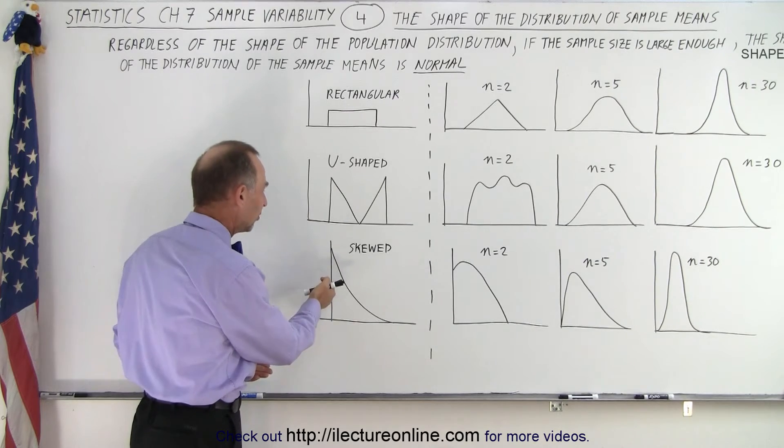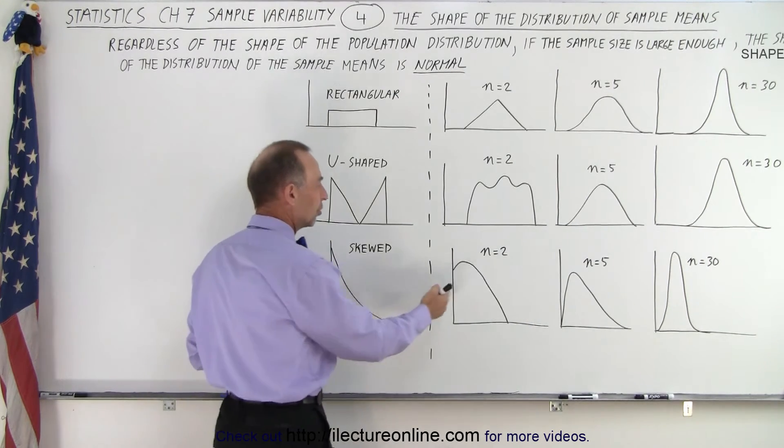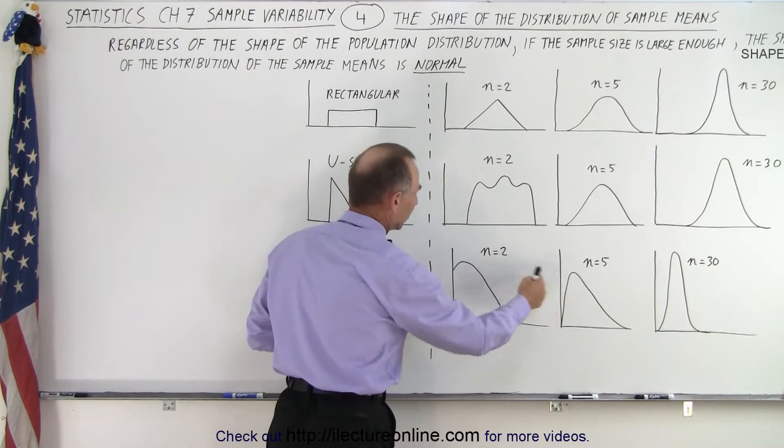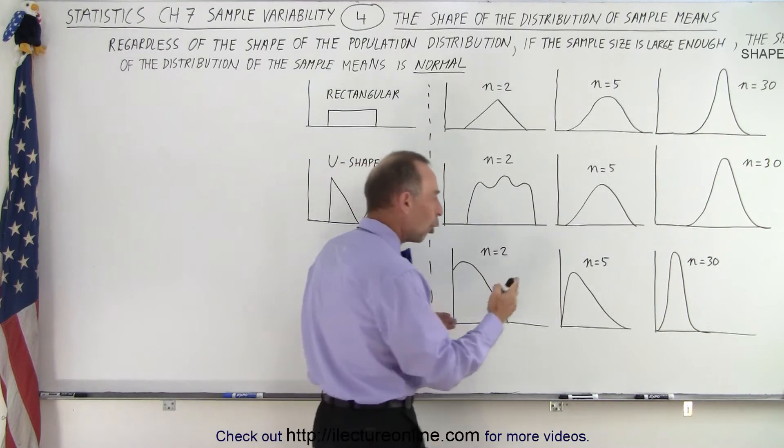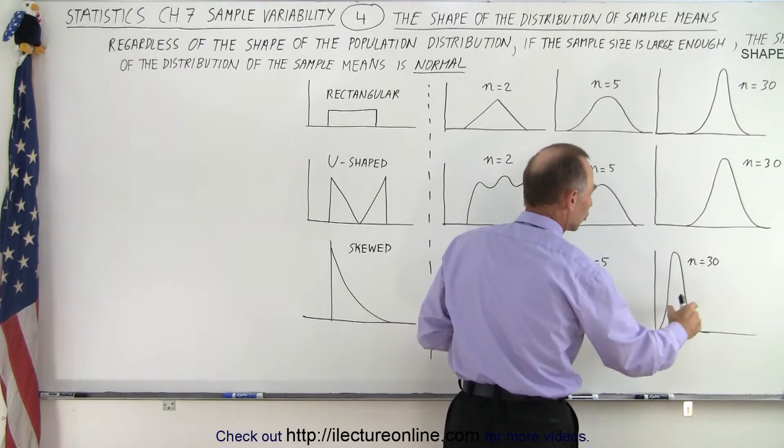Even when it looks like this, and it's skewed to one side, notice that originally with small sample sizes, it doesn't look like there's a normal distribution. But eventually, you make the sample size large enough, it also becomes a normal distribution.